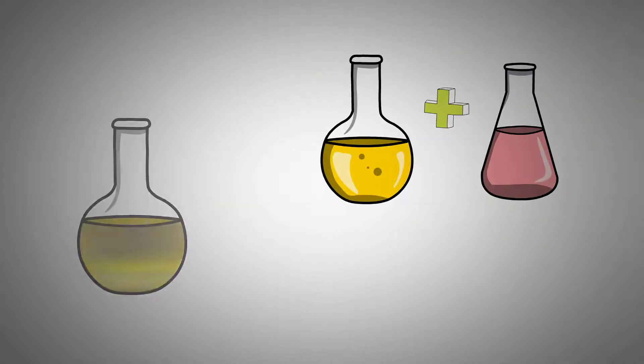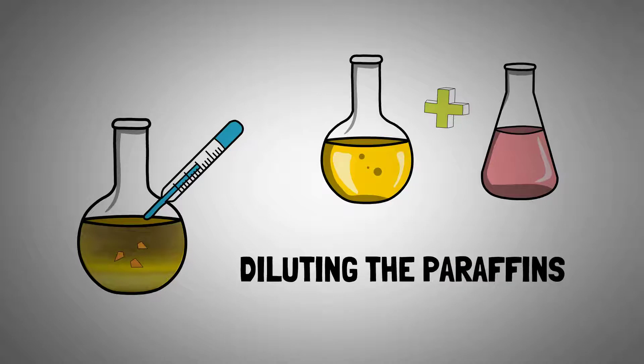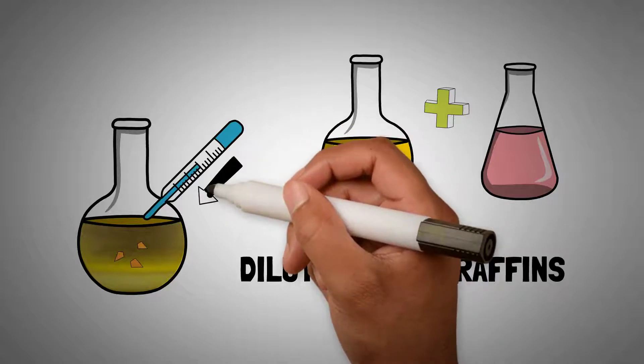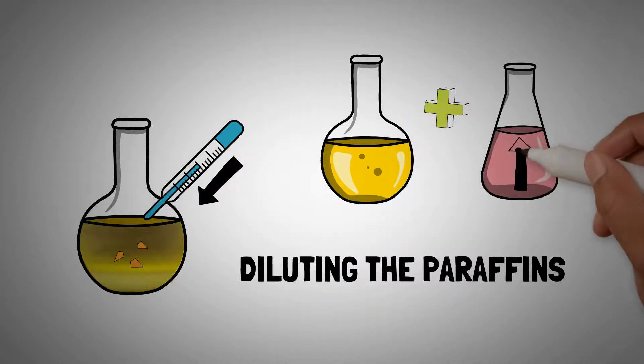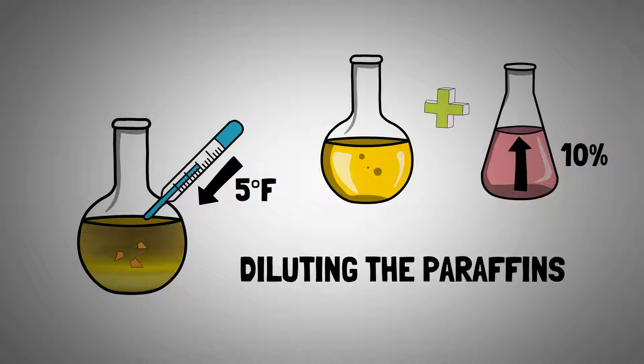Kerosene lowers the fuel's gelling temperature simply by diluting the paraffins. How low that temperature drops depends on how much kerosene you use. You can expect to lower the plug-point temperature by about 5 degrees for every 10% kerosene that you use.